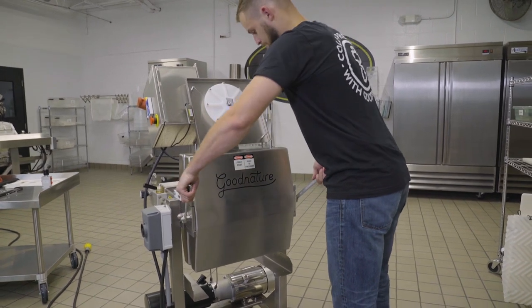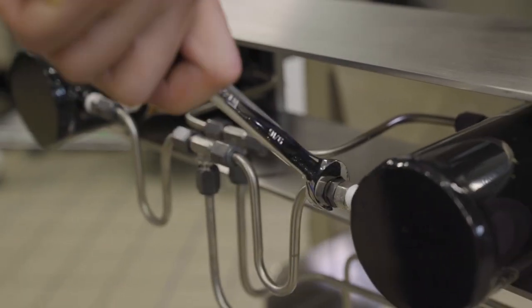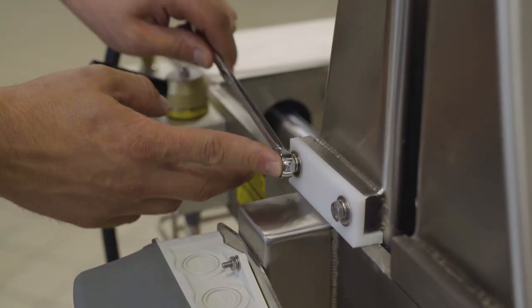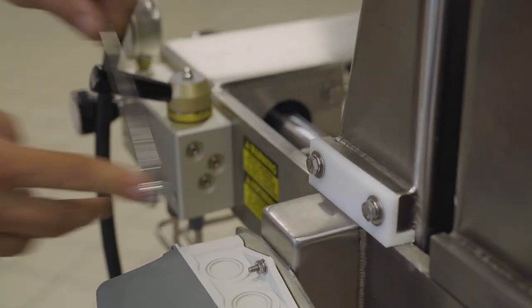Task four is to tighten all bolts, nuts, and screws visible on the machine. Do not over tighten, but use wrenches to ensure they will not come loose during operation.